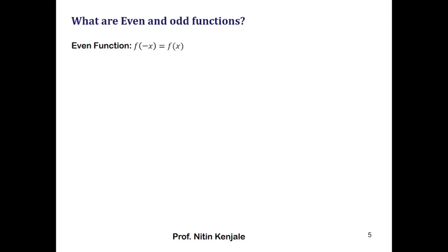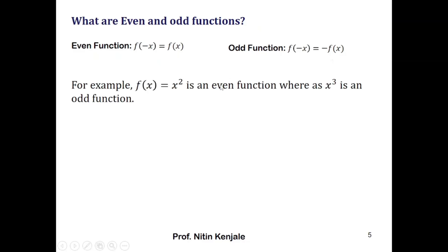We say that if f(minus x) equals f(x), then the function is even, and if f(minus x) equals minus f(x), then the function is odd. For example, f(x) equals x² is an even function, whereas x³ is an odd function. Similarly, cosine functions are even functions and sine functions are odd functions.